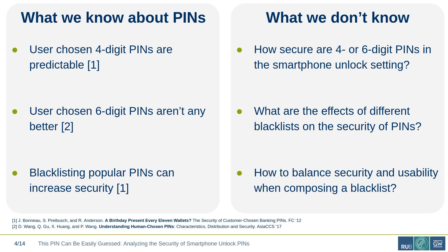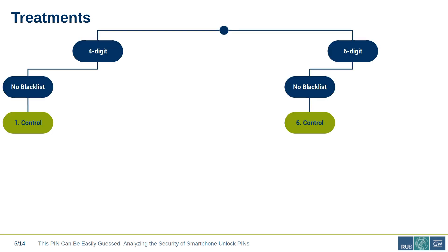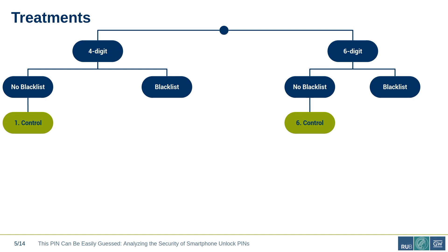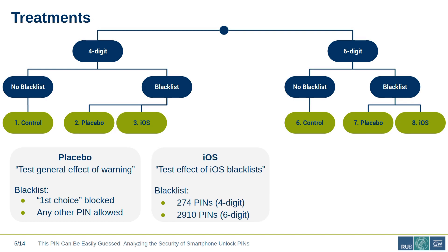With those questions in mind, we designed the treatments for our user study. To compare four and six-digit PINs, we had a control treatment for both lengths where users could create any PIN with no blacklist in place. We also had placebo treatments to test the general effect of a blacklist warning — here we always blocked the first PIN and allowed any other, to test whether just seeing a blacklist warning already has an impact. Our iOS treatments were designed to test the effect of the two real blacklists actually used by Apple on its devices — one for four-digit and one for six-digit PINs.